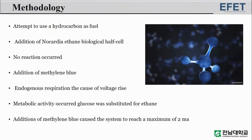In the next series of experiments, an attempt was made to use a hydrocarbon as fuel. An active ethane-oxidizing culture of Nocardia was added to the biological half cell and ethane was bubbled into the solution. Apparently no reaction occurred. On the addition of methylene blue, a slight increase in open circuit voltage was measured; however, this was later shown to be due not to the Nocardia-ethane system but rather to endogenous respiration. A definite increase in metabolic activity occurred when glucose was substituted for ethane. Additions of methylene blue to this system caused current flow to eventually reach a maximum of 2 milliamperes.